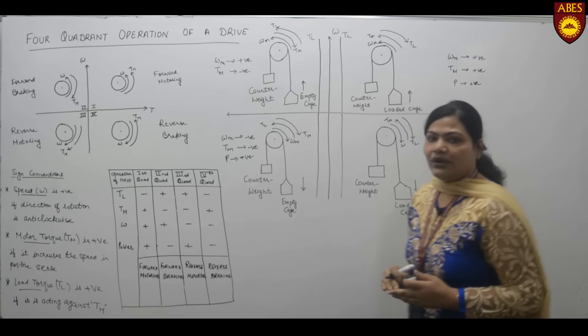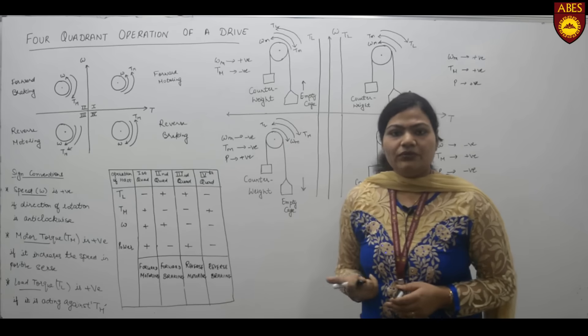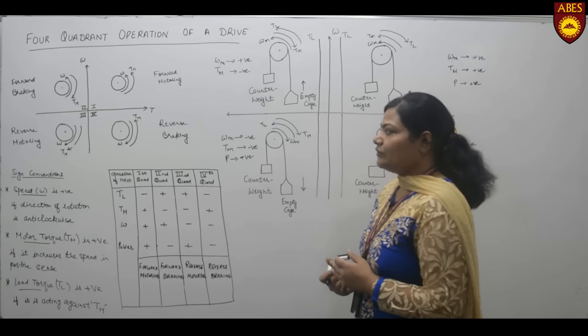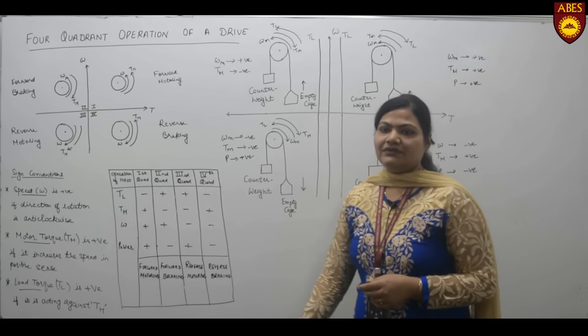In summary, in the first quadrant the motor acts as a forward motoring mode, in the second quadrant as a forward braking mode, in the third quadrant as a reverse motoring mode, and in the fourth quadrant as a reverse braking mode. Thank you.